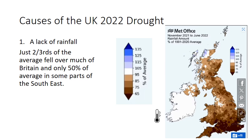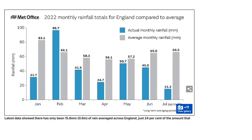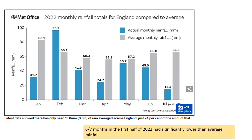The causes of the UK 2022 drought: the number one cause was a lack of rainfall. Just two-thirds of average fell over much of Britain, and only 50% of average in many parts of the southern and eastern parts of the UK. This meant there was a lack of water coming into the system. You can see from this graph that for six of the first seven months of 2022, there was less than average rainfall.